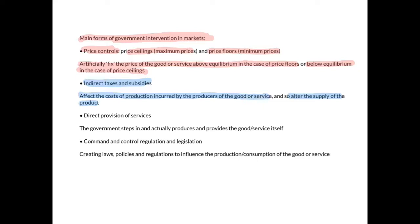The third form is direct provision — the government steps in to actually produce and provide the good or service itself. The fourth and last type is command and control regulation and legislation — governments create laws, policies, and regulations to influence either the production or the consumption of a good or service, such as a legal minimum age to purchase alcohol or cigarettes, or laws restricting where people can smoke.